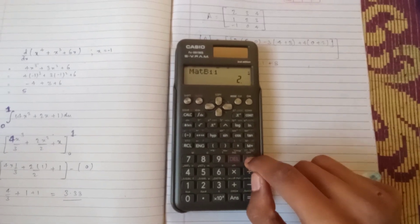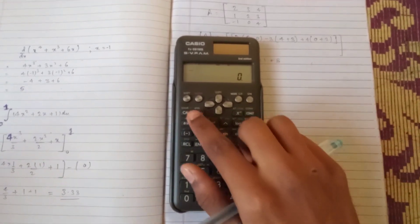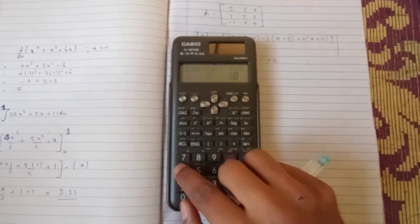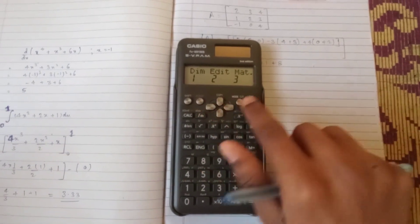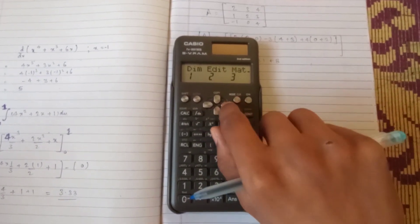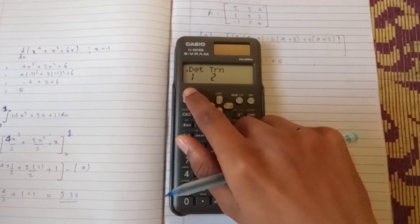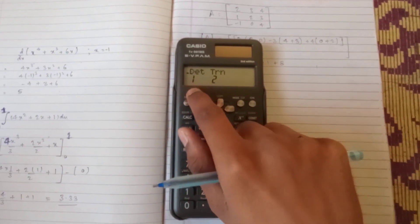Now just clear the display and select shift plus 4 and scroll it. This is the button to just scroll it and we are getting DET, that means determinant.